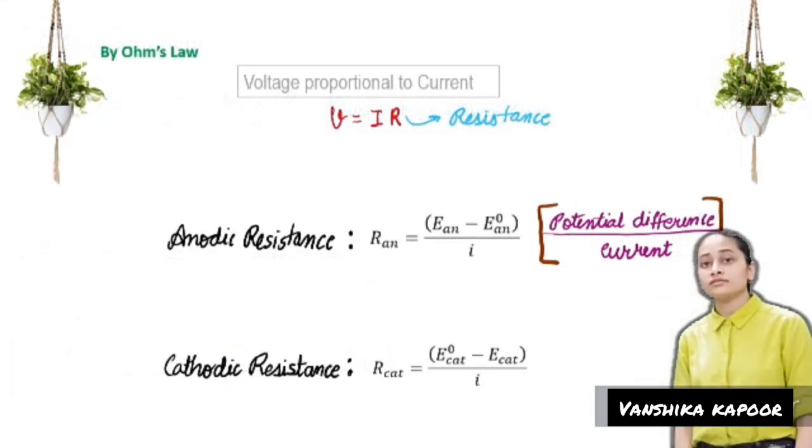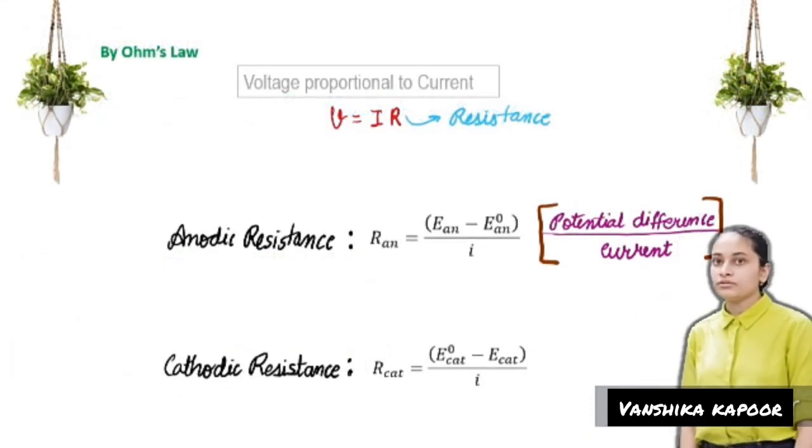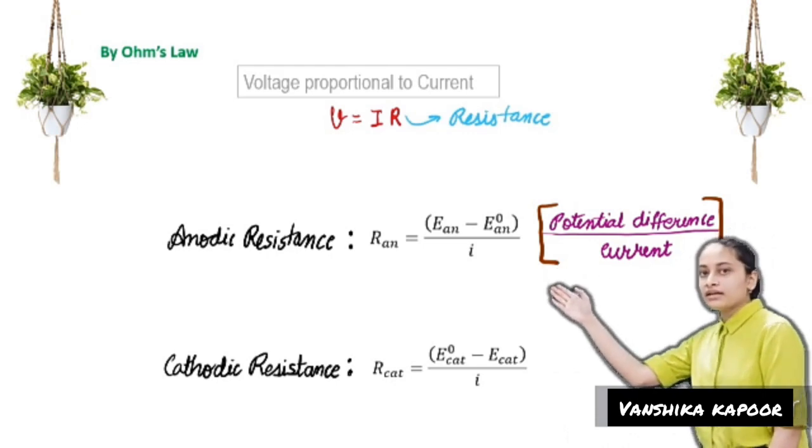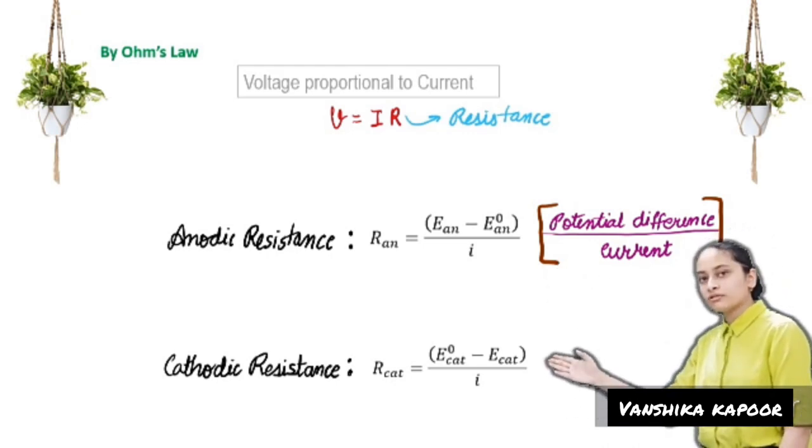By Ohm's law, resistance equals voltage divided by current. The anodic resistance can be calculated, and the cathodic resistance can be calculated.